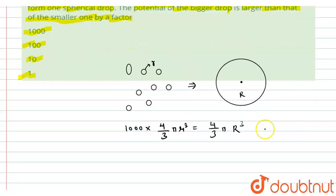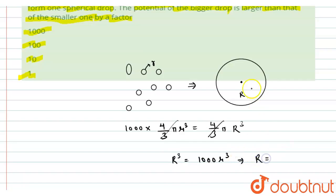From here we can cancel out 4/3π, and we get R³ = 1000r³. From here we can write that the radius of the bigger water drop is equal to 10 times the radius of the smaller drops. Let this be equation number one.